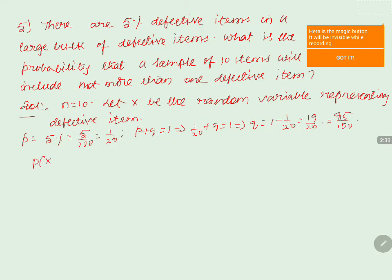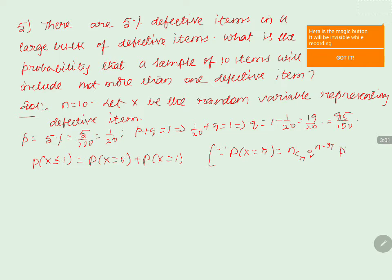Now we will calculate the value P(X ≤ 1), because it is not more than one defective item — it can be equal to one or less than one. So we write P(X ≤ 1) as P(X=0) plus P(X=1). We use the formula P(X=r) equals nCr into q to the power of n minus r into p to the power of r, where r equals zero and r equals one respectively.